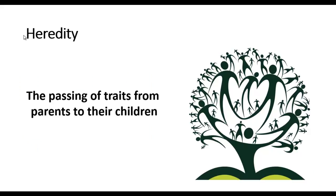Heredity, or a hereditary disease, is the way in which parents transfer genetic traits down to their children. This can deal with hair color, height, weight, and things of this nature. The reason it's important when talking about diseases is that if a parent suffered from heart disease or developed some kind of cancer, there's an increased risk for their child. That's why doctors get a family medical history — because these traits are passed down from generation to generation.